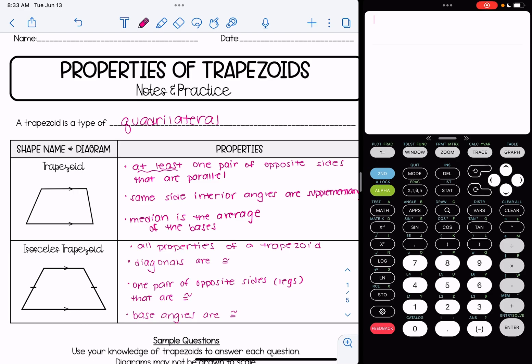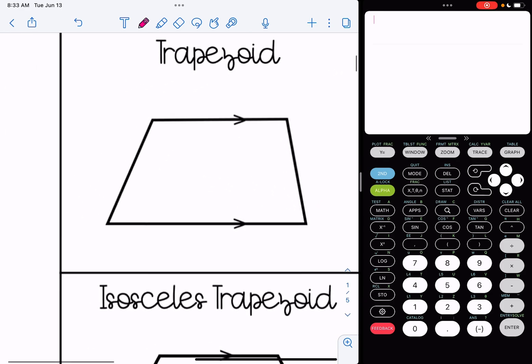The same side interior angles are supplementary. Let's talk about what that means. So when we learned about parallel lines cut by a transversal, these two angles that I'm marking off are called same side interior angles. They are on the same side of the transversal and they're in the interior or in between the two parallel lines. So those are supplementary here.